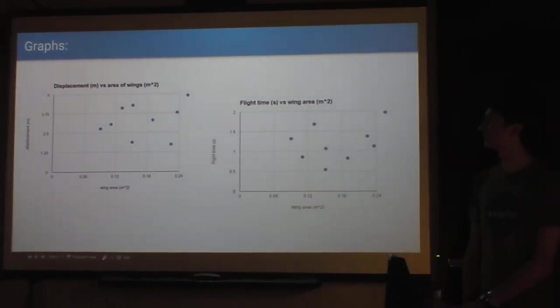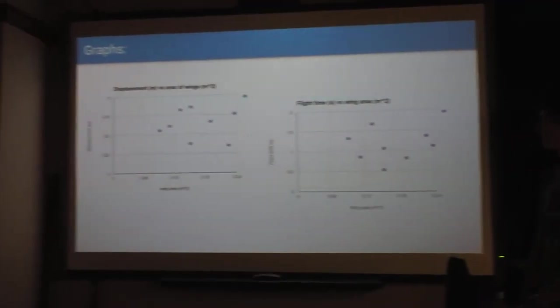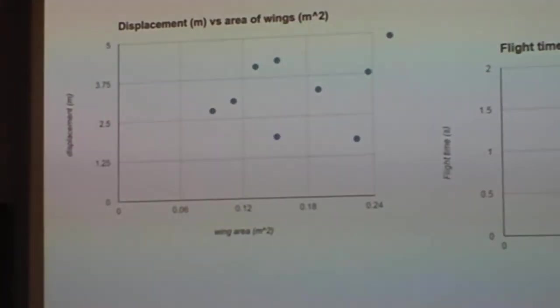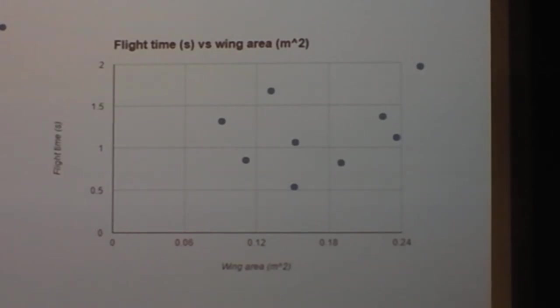So these are graphs of the displacement of the plane and the flight time versus the surface area of the wings, and they are not good. Like, there's not really a trend that we could find. So these really didn't help move much. Which is a bummer.